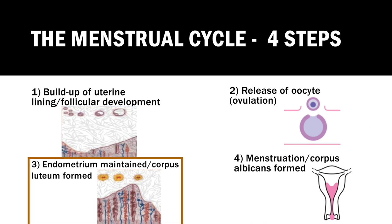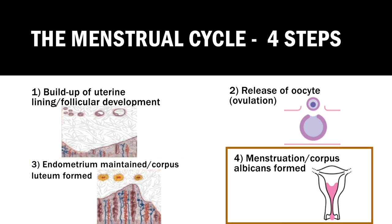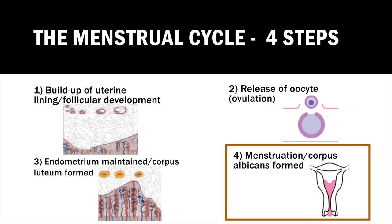Step three occurs between days 15 to 28. The corpus luteum develops from the remnants of the ruptured follicle. Luteinised theca cells within it produce progesterone, which promotes increased glandular development of the endometrium. Step four is menstruation, occurring approximately on days 1 to 5 of a 28-day cycle. The corpus luteum degenerates if fertilisation and implantation haven't taken place, prompting rapid withdrawal of progesterone, shedding of the endometrial lining, and onset of menstrual flow.